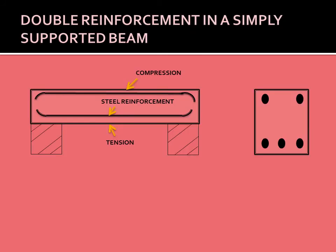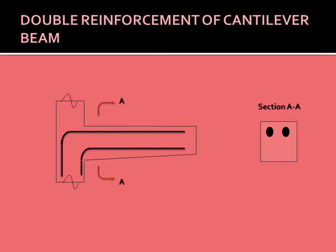This is a picture of a doubly reinforced simply supported beam, and this is the doubly reinforced cantilever beam. In the cross-section, there are four bars — two in the compression zone and two in the tension zone.